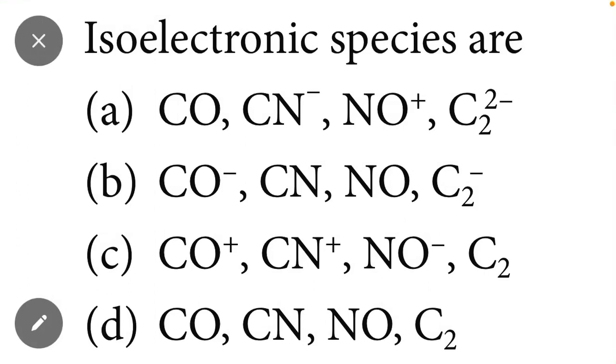Student, in this video we will study the most important questions of chemistry. So the question is: isoelectronic species are... Isoelectronic: iso means same and electronic means electrons. In simple wording, we can say that all the species having same number of electrons is called isoelectronic species. So option A is the correct option. How is option A the correct option?